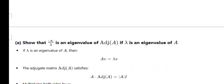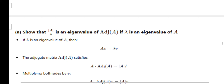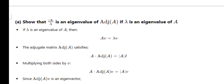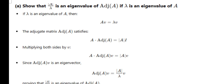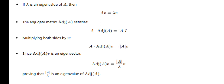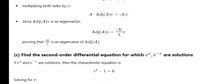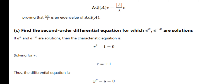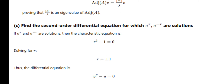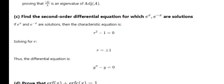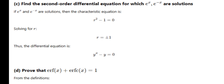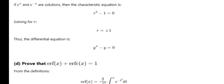Show that |A|/λ is an eigenvalue of adj(A). Let Aν = λν. The adjoint matrix satisfies A · adj(A) = |A| · I. Multiplying both sides by ν and cross-multiplying gives the result. Next: find the second order differential equation for which eˣ and e⁻ˣ are solutions. The roots are m₁ = 1 and m₂ = -1, so the auxiliary equation is m² - 1 = 0, giving the differential equation y'' - y = 0.